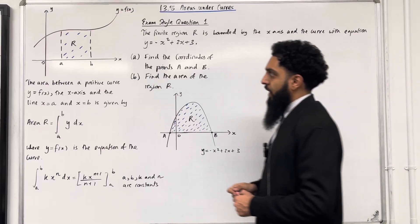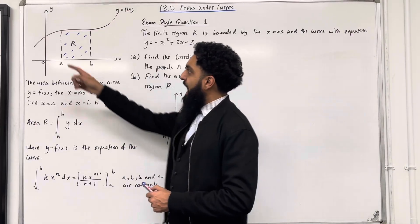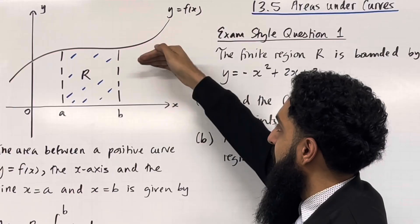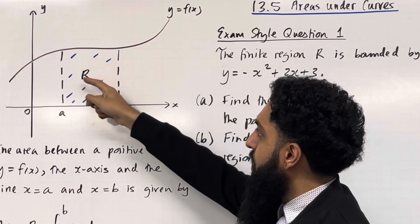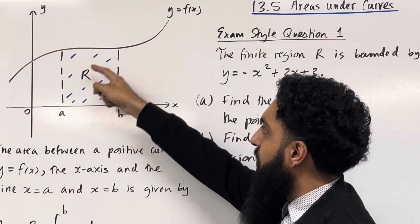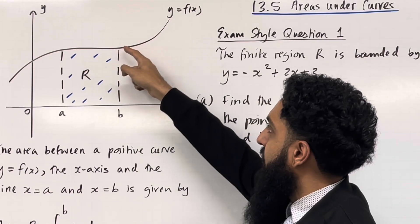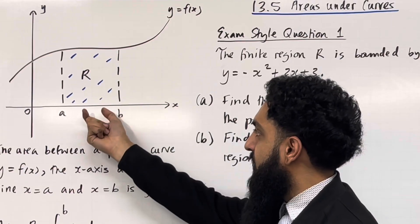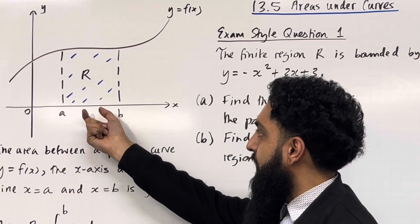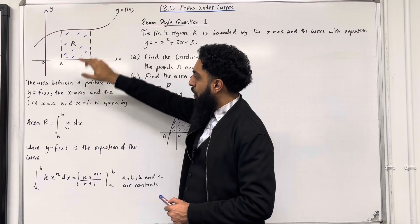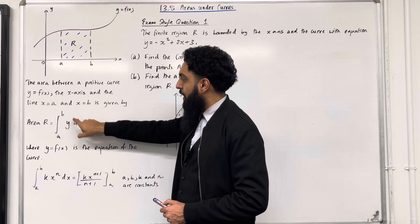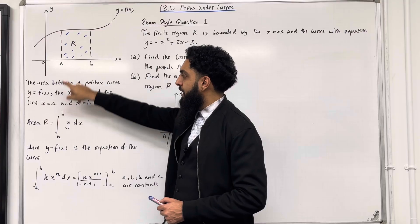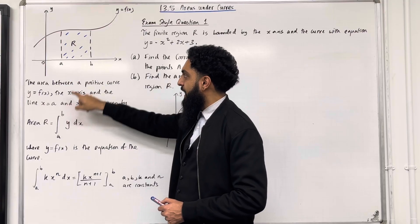We have a coordinate grid. We have the curve y = f(x). We call this a positive curve because it's above the x-axis. The region R is bounded by the curve y = f(x), the line x = a, the line x = b, and the positive x-axis. To work out the region R, we need to integrate from a to b the curve y dx, where the lower limit is x = a and the upper limit is x = b.